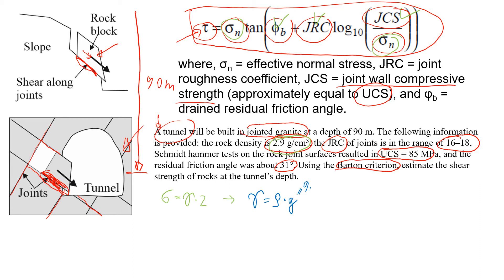So you will see that the unit weight will be 2.9 times 9.81, which will give us 28.45 kilonewtons per cubic meter.